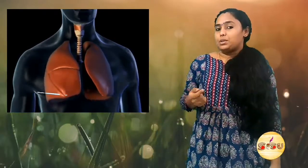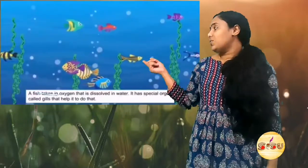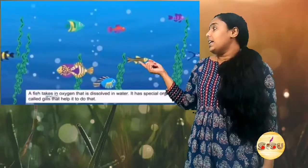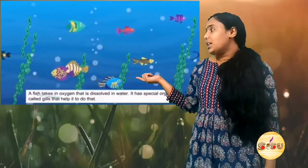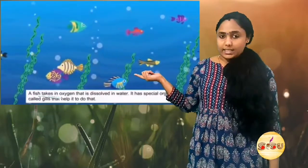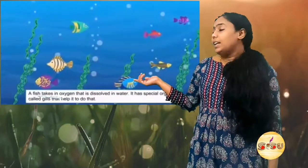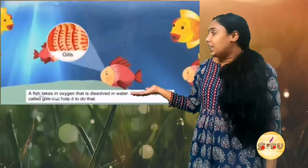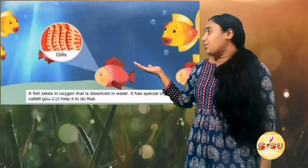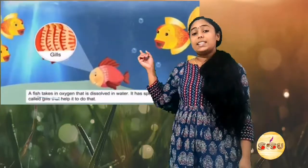Next, we can see some other examples. See this fish, children — this fish is a living organism, and the breathing organ of this fish is its gills.